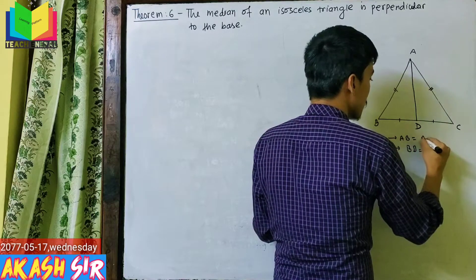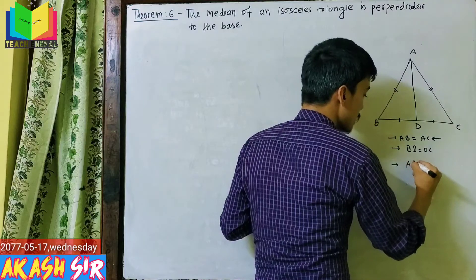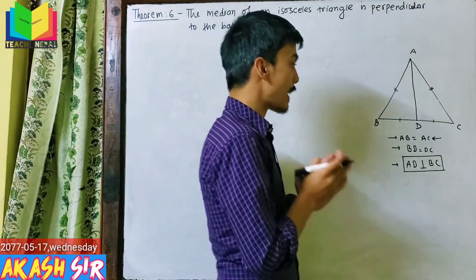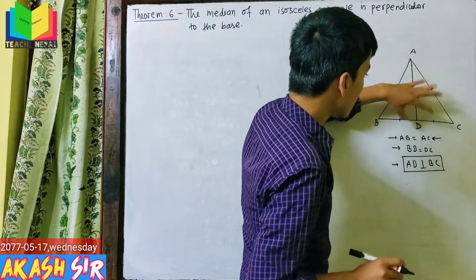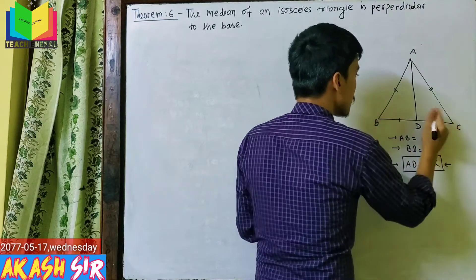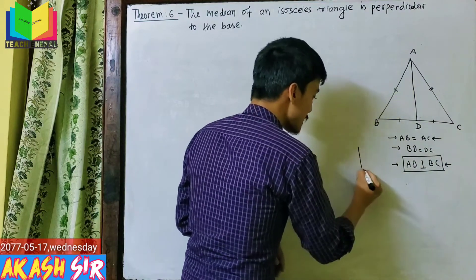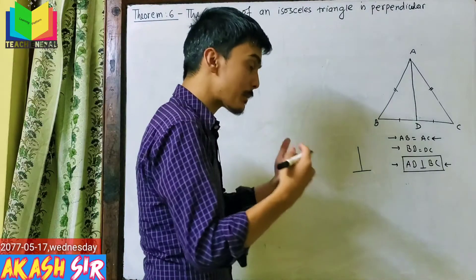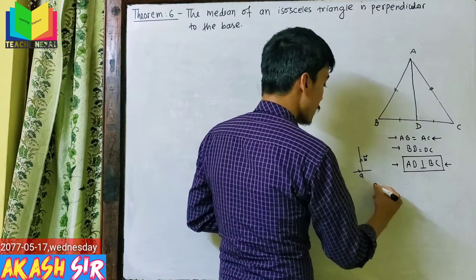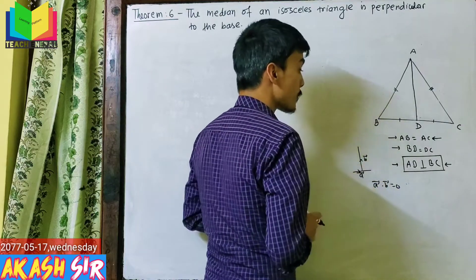The isosceles triangle has AB equal to AC. What we have to prove is that the median AD is perpendicular to BC — that is, AD and BC meet at 90 degrees. In vector terms, if AD vector and BC vector are perpendicular, their scalar (dot) product must equal zero. So AD·BC = 0 means they are perpendicular.